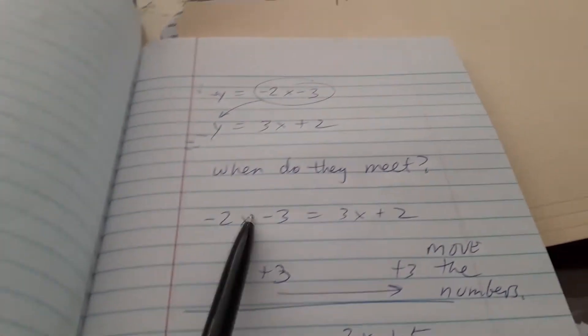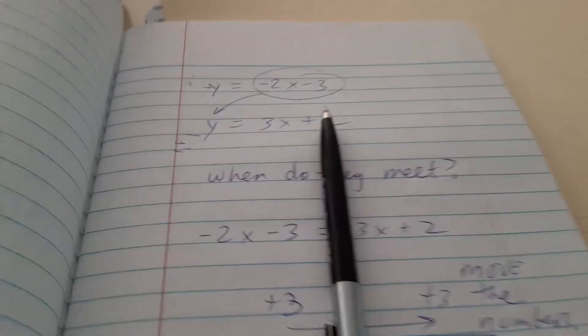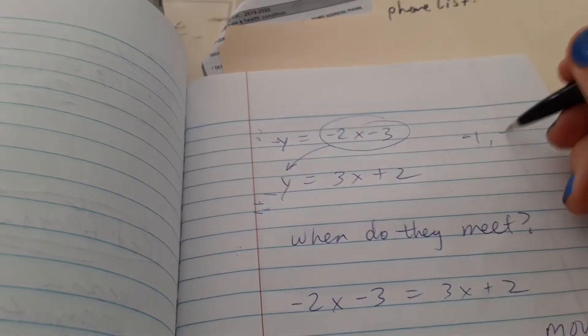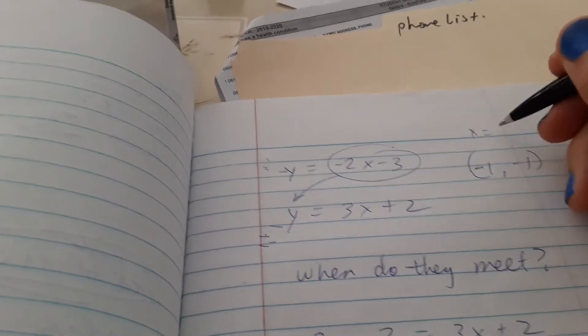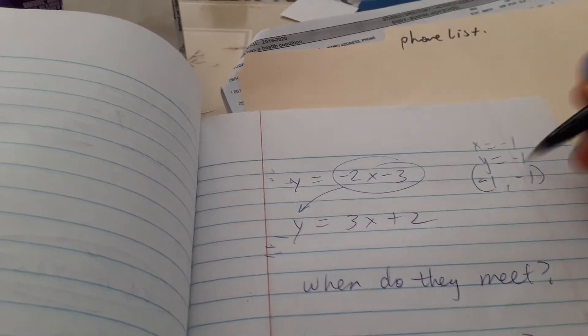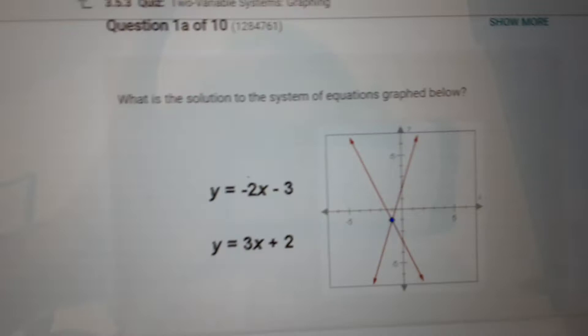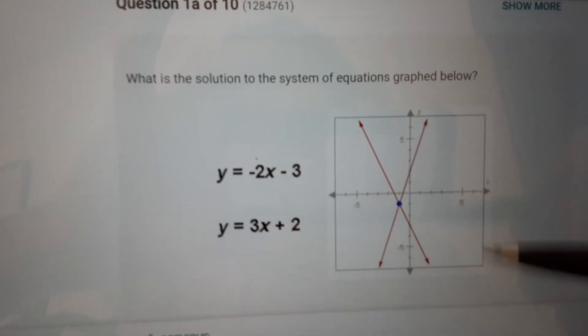So let's just plug it in. We can even find it. Look at that. Negative 1, negative 1. x equals negative 1, y equals negative 1. This is great. They're telling us right there.